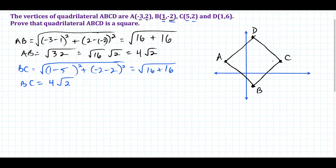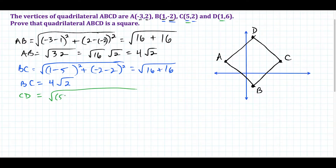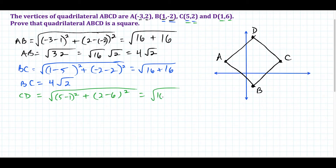Now we target side CD. We take the square root of 5 minus 1, squared, plus 2 minus 6, squared. Once again we have square root of 16 plus 16 — that's 4 squared plus negative 4 squared. So CD is equal to 4 square root of 2.